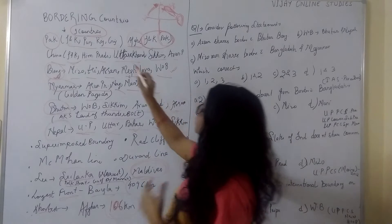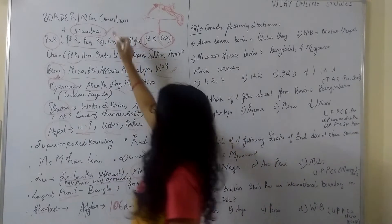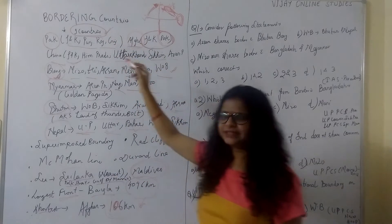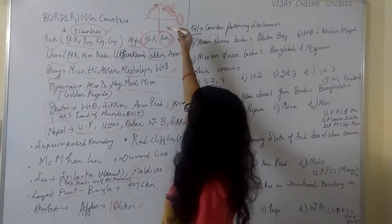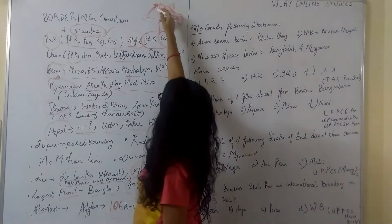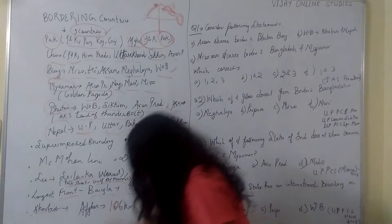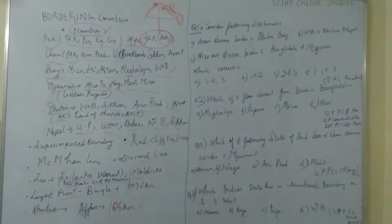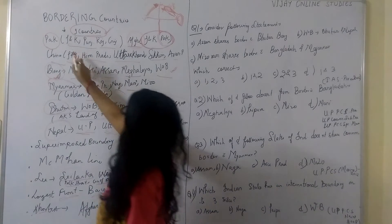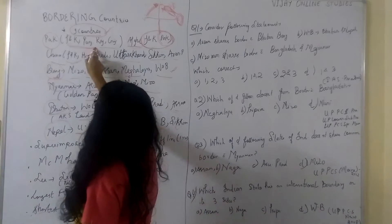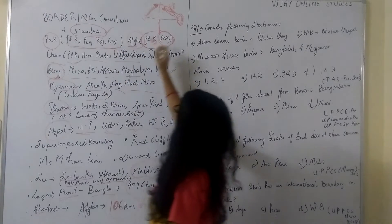We are bordered by nine countries. The nine countries include Pakistan. Pakistan is here in the northwest region, bordering J&K, Punjab, Rajasthan and Gujarat.